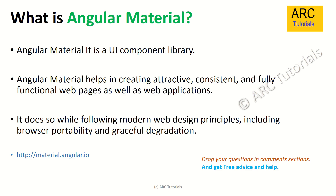What is Angular Material? Angular Material is a set of UI component libraries. It provides all the components required to build any modern UI framework. Angular Material helps in creating attractive, consistent, and fully functional web pages as well as web applications, following modern web design principles including browser portability and graceful degradation. To learn more, you can go to material.angular.io.